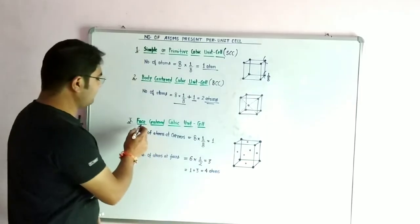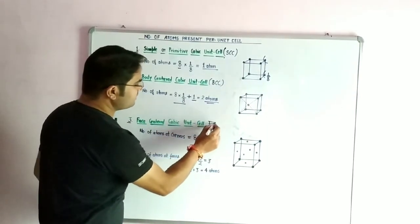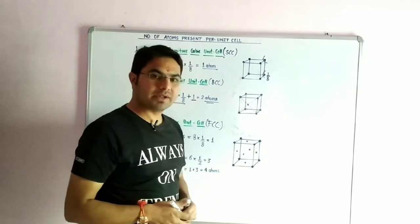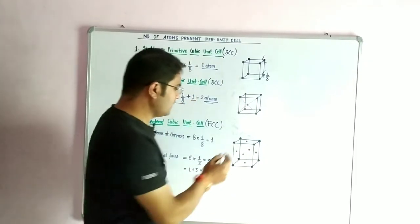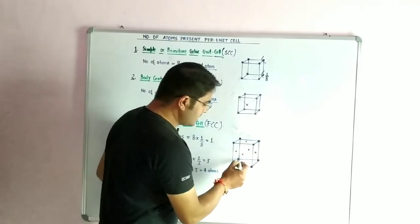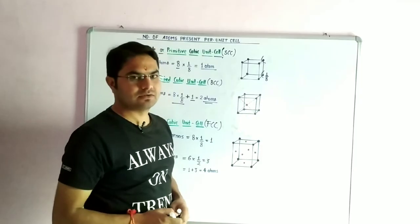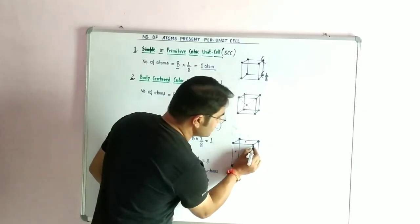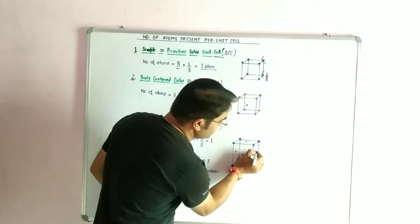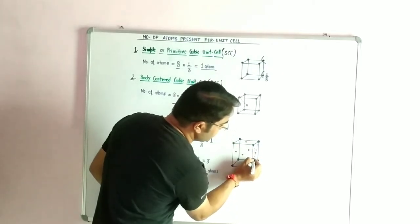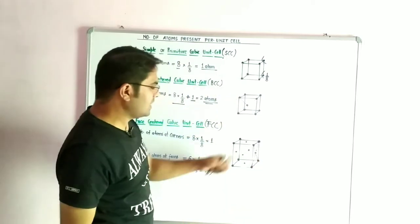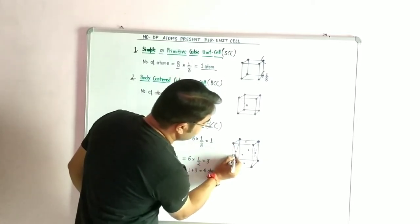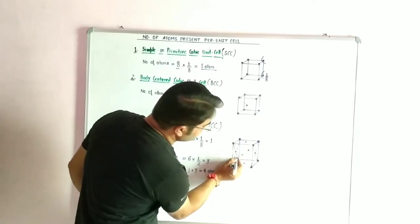Next is the face-centered cubic unit cell, that is FCC. By definition, the constituent particles are present at the corners as well as at each face. In this cube, we have six faces. We represent the center of each face with a circle. There are six faces in total — upper and lower, front and back, and the two sides.